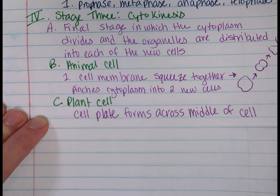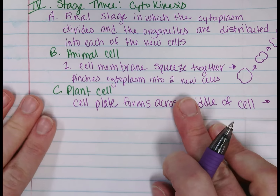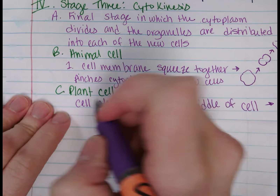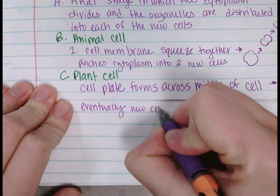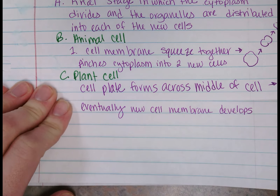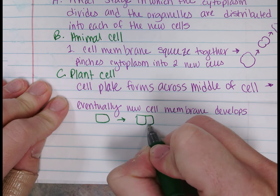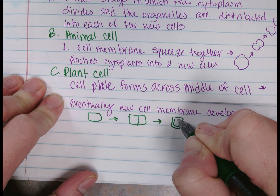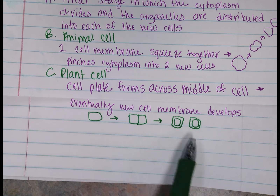Cell plate forms across the middle of the cell, and eventually a new cell membrane develops. These plant cells are going to be a lot more rectangular, and essentially it's just going to become two new cells. The cell plate is forming across the middle, and now you have two new plant cells — the outermost edge being the cell wall and the innermost edge being the cell membrane.